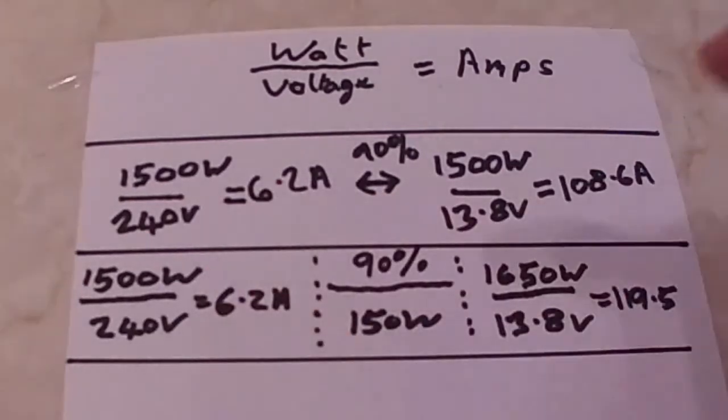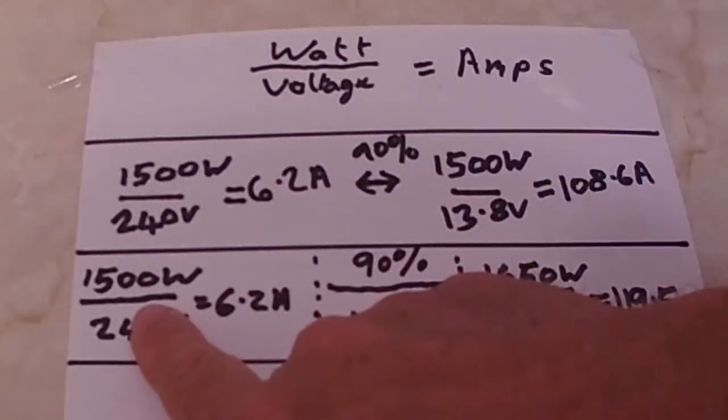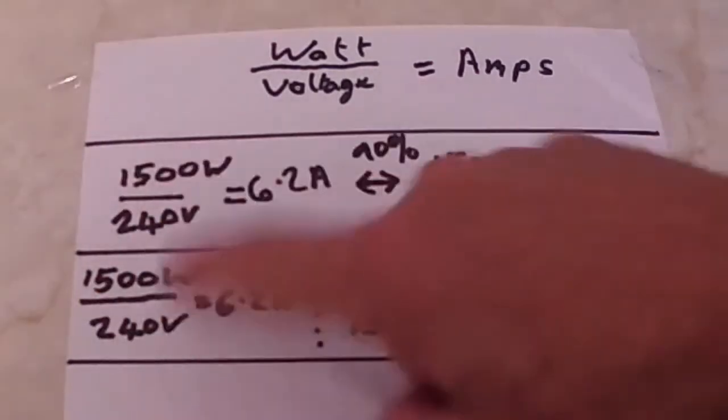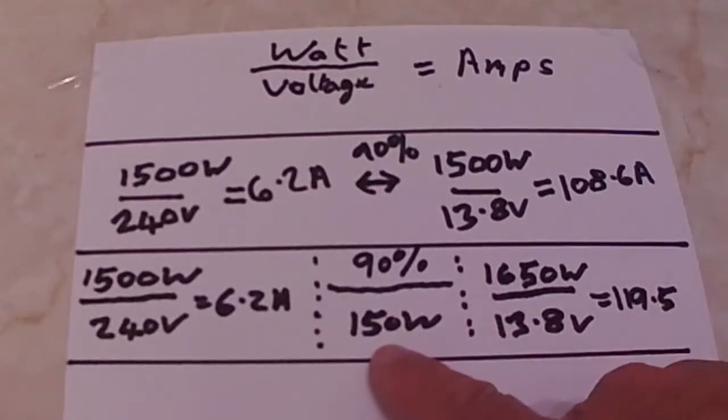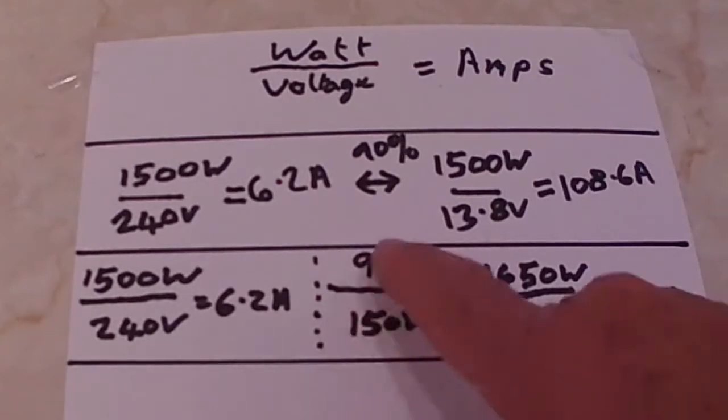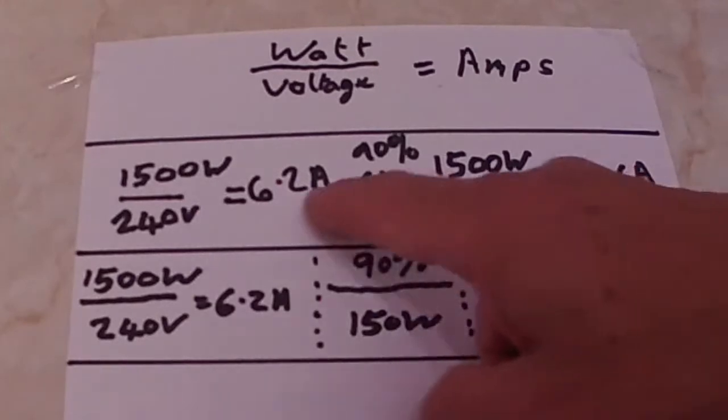And if you switch on a hairdryer which is 1500 watt and you switch on a toaster or kettle, you can imagine you could be up to 3 kilowatt very easily. Which means that's 240 amps being drawn from your battery. And the power in the inverter will double as well because it's only 90 percent efficient, so you've got 300 watts of heat in your inverter.